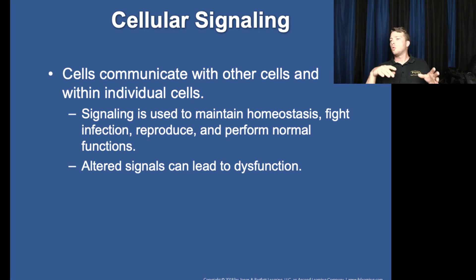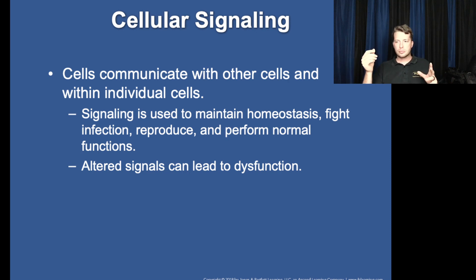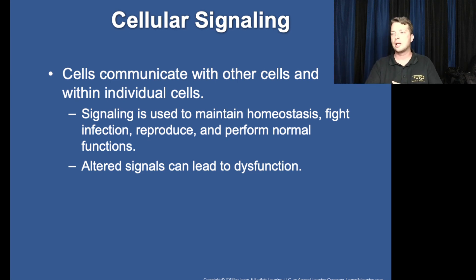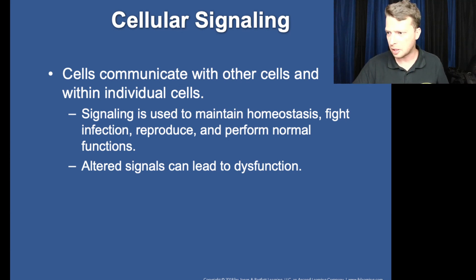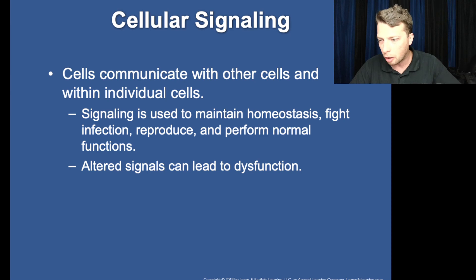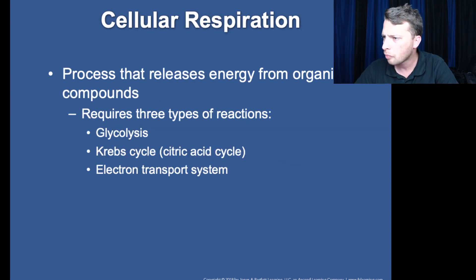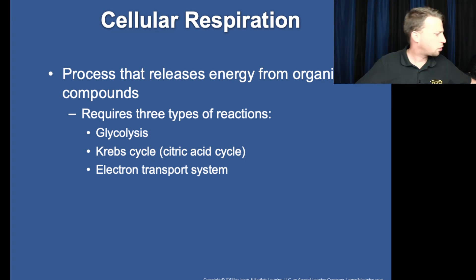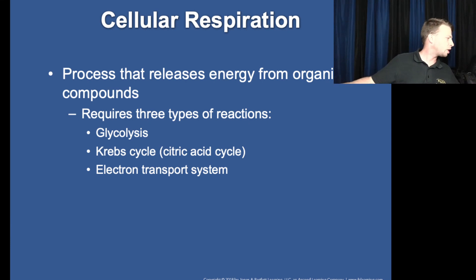Cell signaling — we'll discuss this more when talking about the immune system. It plays a big role in T-cell activity and viral infections, but also in requesting more oxygen, removal of CO2, and other functions. That kind of gets through cell structure and heads into a new section on cellular respiration.